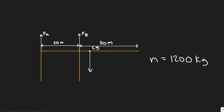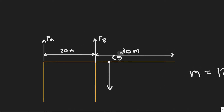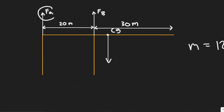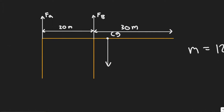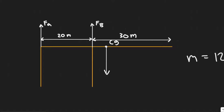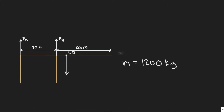In this problem we're told to calculate Fa and Fb for the uniform cantilever shown in the figure, whose mass is 1200 kilograms. The structure has a force Fa, a force Fb, and the center of gravity is in the middle. We're given the distance between the two forces, and the distance to the edge is 30 meters.